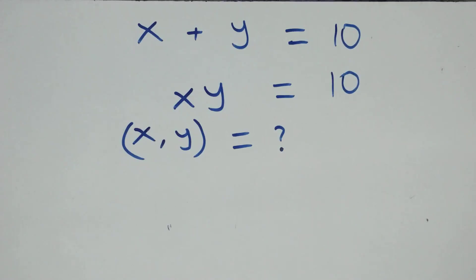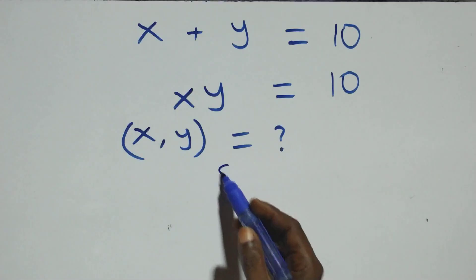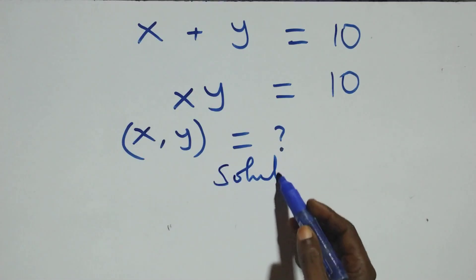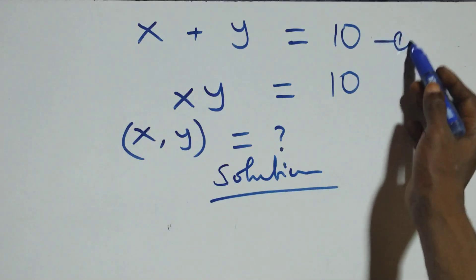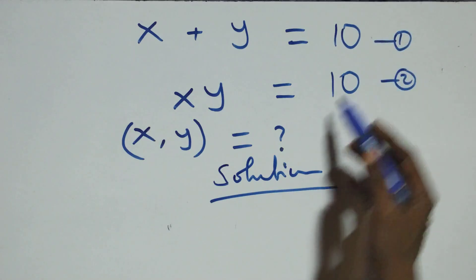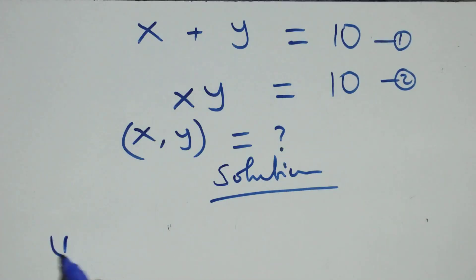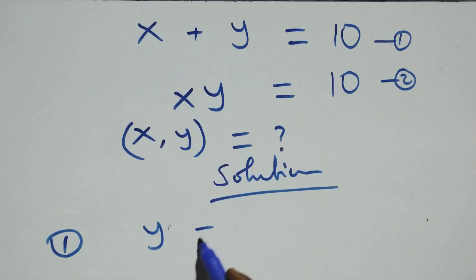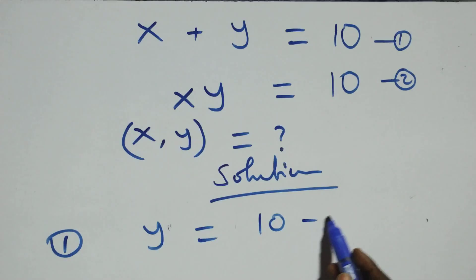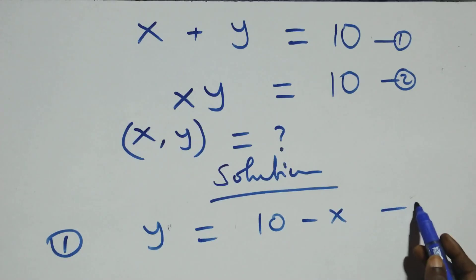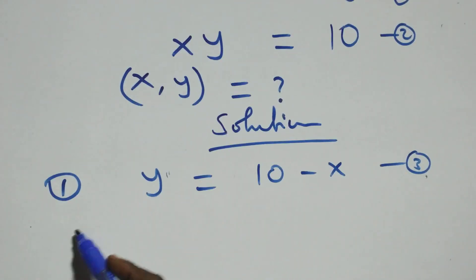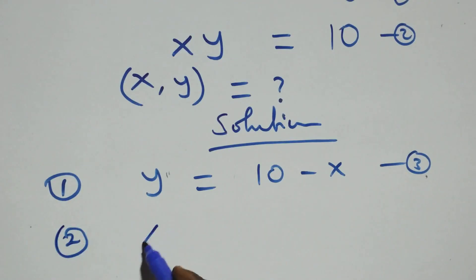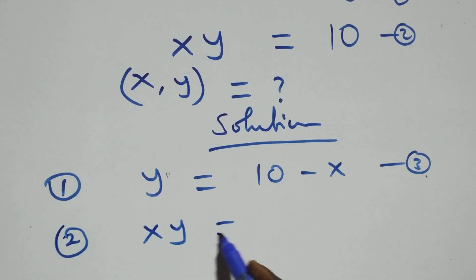Hello, you're welcome. Here's how to solve this nice algebra equation. From what we have here, we can label the first equation as equation one and the second as equation two. From equation one, we make y the subject: y equals 10 minus x, and call this equation three. Also from equation two, we have x times y equals 10.